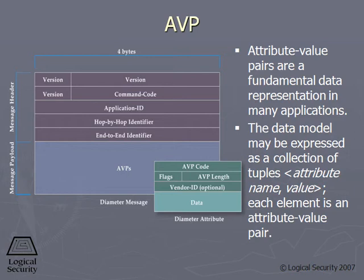What that means is Diameter has a lot more boxes, which means you can have a lot of different types of communication. It has boxes that can understand EAP, digital certificates, and Kerberos, where the Radius protocol didn't have all those boxes — it only had boxes for PAP, CHAP, and EAP. Diameter also has boxes to understand Voice over IP and Mobile IP, where Radius didn't have that in its protocol.